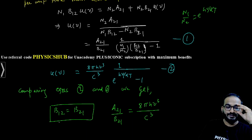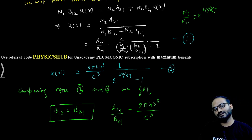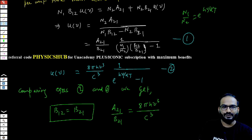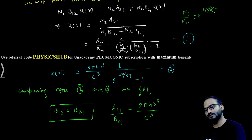B12 equals B21, which means the probability of stimulated absorption and stimulated emission are the same. And you can see spontaneous emission by stimulated emission ratio is varying as proportional to ν³. These are the concepts of Einstein's A and B coefficients. I hope you understand this.